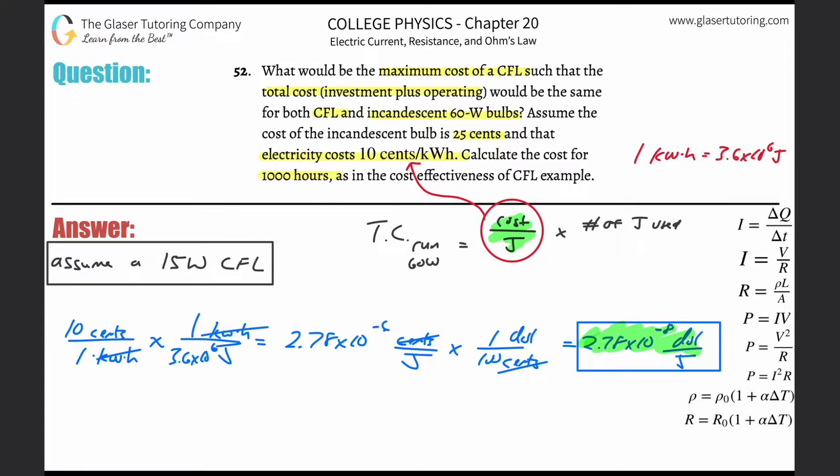Now, if you need it in dollars, let's convert it into dollars. Cents on the bottom dollars on the top, a hundred cents in a dollar, and now it comes out to be 2.78 times 10 to the minus eight dollars per joule. So what we just found here is the cost per joule. That's all it is. Now what I need to do is I need to find the number of joules that are used by this 60 watt bulb.